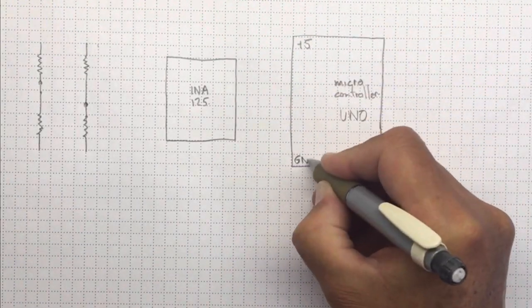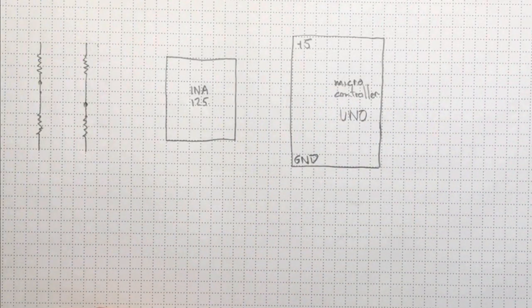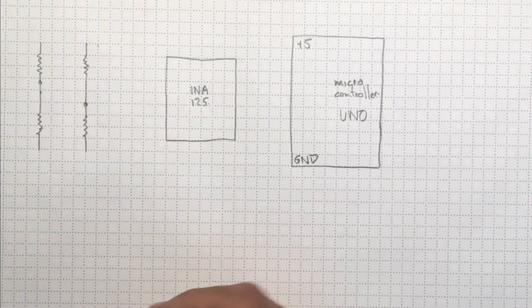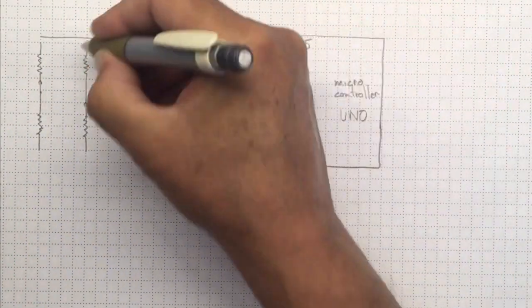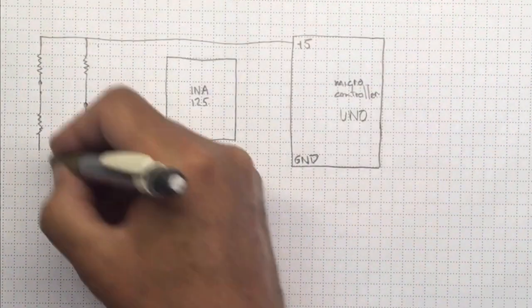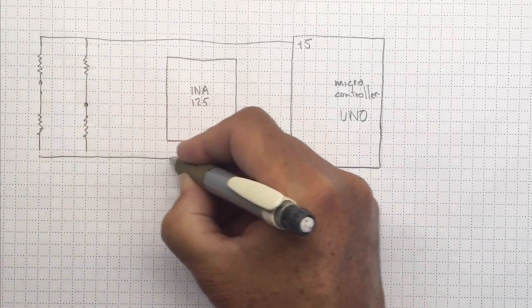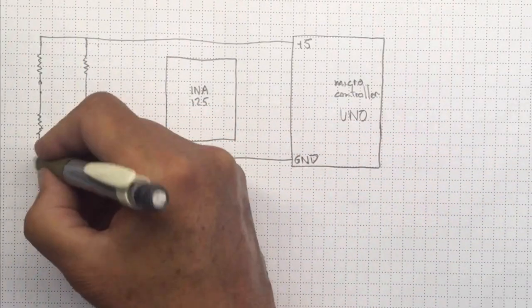We might choose an UNO, which will give us a positive 5 and ground power supply that we can use to power the rest of the circuit. So let's note that it's got plus 5 and ground connections there on the UNO.